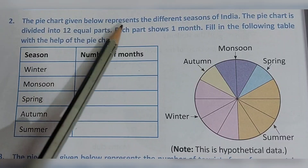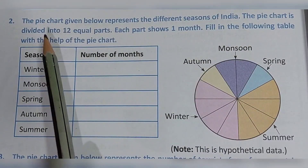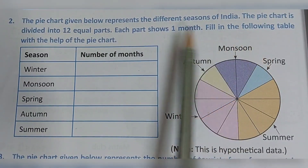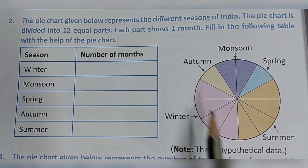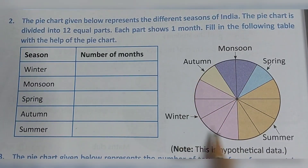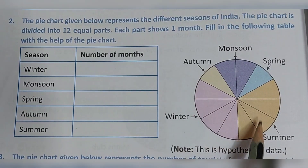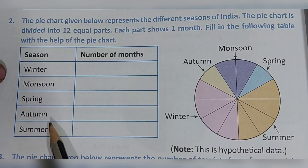Let us interpret one more question. The pie chart given below represents the different seasons of India. The pie chart is divided into 12 equal parts, and each part shows one month. We have to fill in a table with the number of months for each given season using the pie chart.